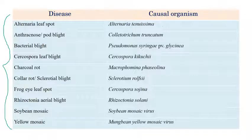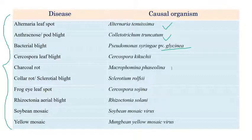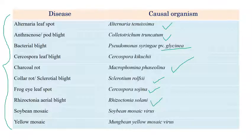The important diseases in soybean are: Alternaria leaf spot caused by Alternaria tenuissima; Anthracnose or Pod Blight caused by Colletotrichum truncatum; Bacterial Blight caused by Pseudomonas syringae pv. glycinea; Cercospora leaf spot caused by Cercospora kikuchii; Charcoal Rot caused by Macrophomina phaseolina; Collar Rot or Sclerotial Blight caused by Sclerotium rolfsii; Frog eye leaf spot caused by Cercospora sojina; Rhizoctonia aerial blight caused by Rhizoctonia solani; Soybean mosaic caused by Soybean mosaic virus; and Yellow mosaic caused by Mungbean yellow mosaic virus.